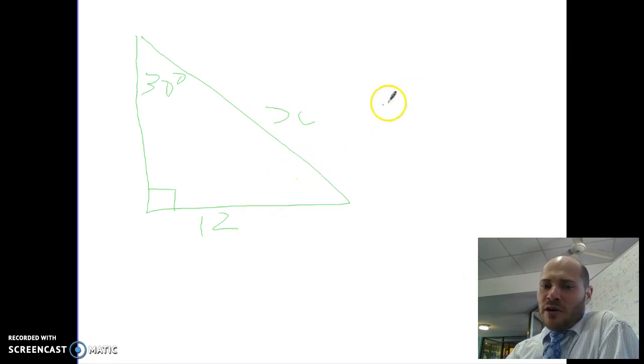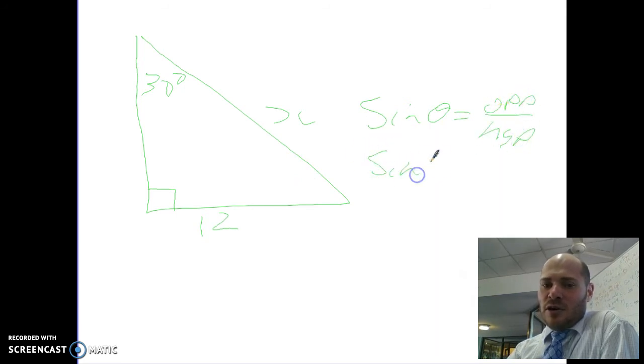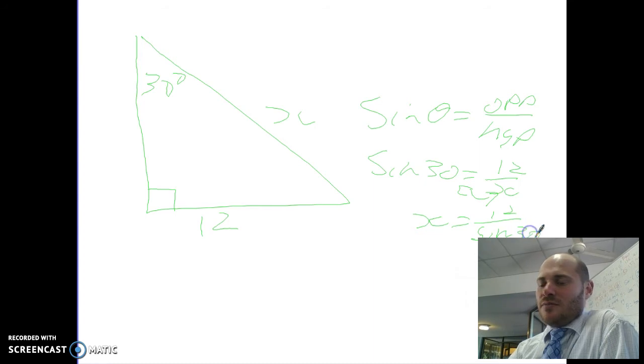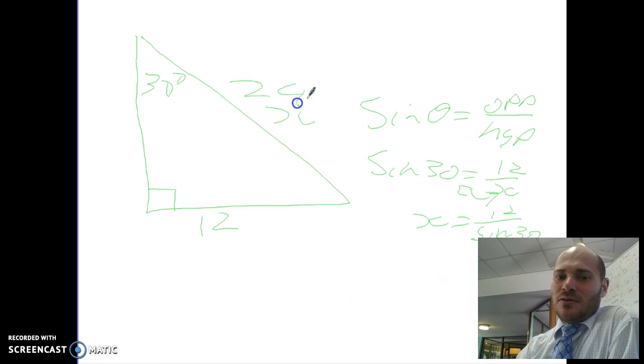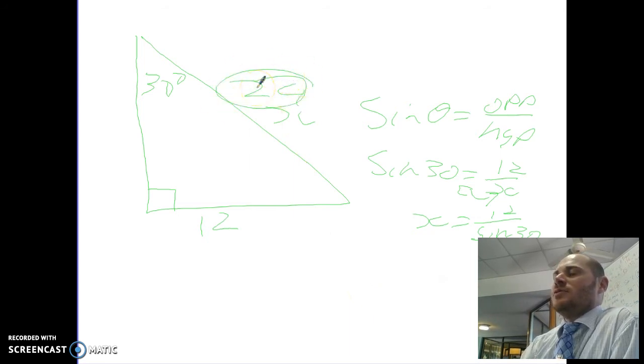If I were to do my working, I go sine of the angle equals opposite over hypotenuse. Right? So sine of 30 equals 12 over x. I swap those two around. And x equals 12 divided by sine 30. I know that sine 30 is 0.5. So basically, I'm finding double 12. Double 12, of course, is 24. So if I punch into my calculator, 12 divided by sine 30, I will get 24. But that's the way that we use those ratios to find the missing side and the missing angle.